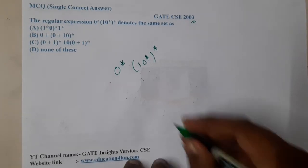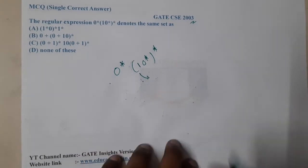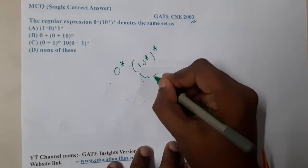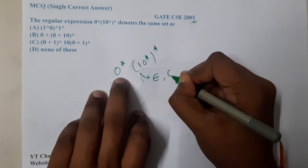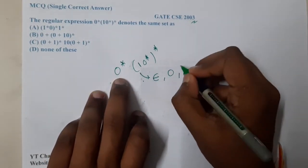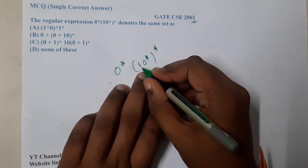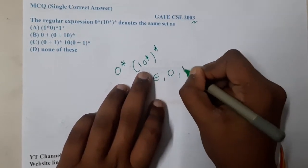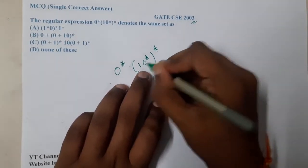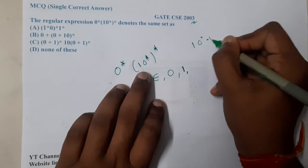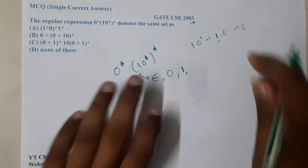Whenever you are working with these types of examples, please start writing the minimum possible things. Can I generate epsilon? Yes. Can I generate a single zero? Yes. Can I generate a single one? Yes — because from here I take one with zero-power-zero, which is just one, and one times epsilon is one. So single one is also possible.